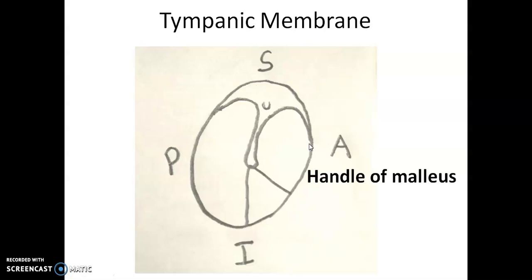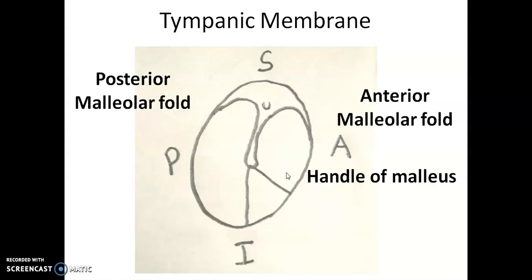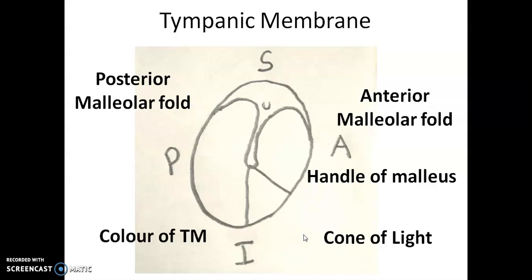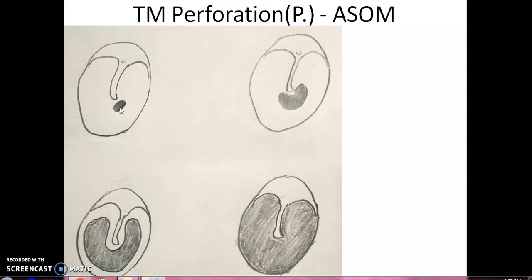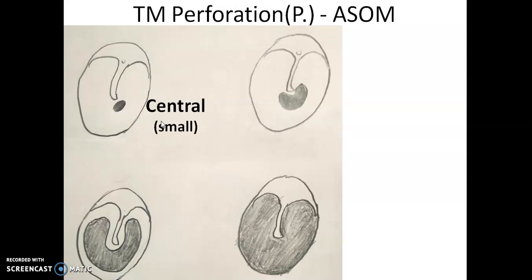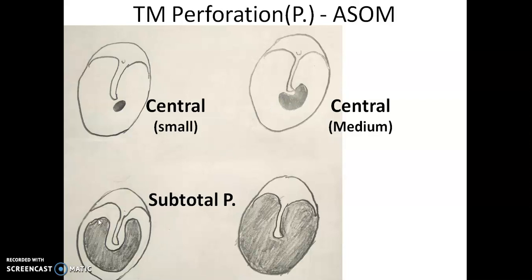Reviewing the normal tympanic membrane: there is a handle of malleus, anterior and posterior malleal folds, and when you throw light on it — since it is obliquely oriented — a bright reflection called the cone of light is seen at the anterior inferior quadrant. The normal tympanic membrane is pearly white in color. Types of tympanic membrane perforation: central perforation (small), central medium-sized (horseshoe-shaped), subtotal (about 90% of the membrane is gone but a margin near the annulus persists), and total perforation (the entire tympanic membrane is gone, with only the handle of malleus hanging like a pendulum).